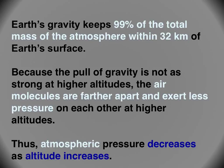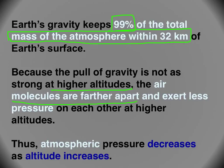Because of Earth's gravity, 99% of the total mass of the atmosphere is within 32 kilometers of Earth's surface. Most of the molecules in the atmosphere are close to the surface. At higher altitudes, the molecules are farther apart, and so there is less pressure.